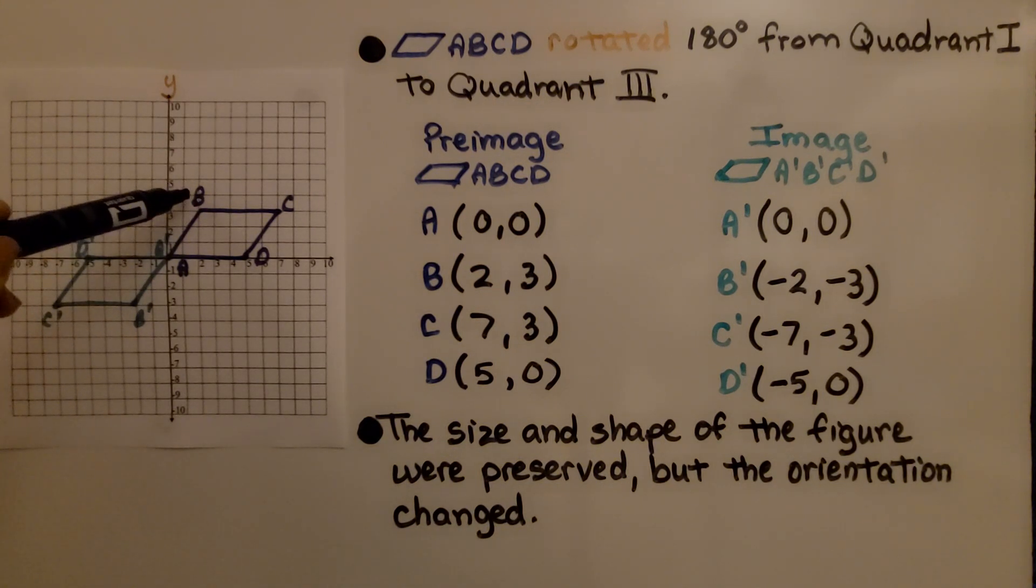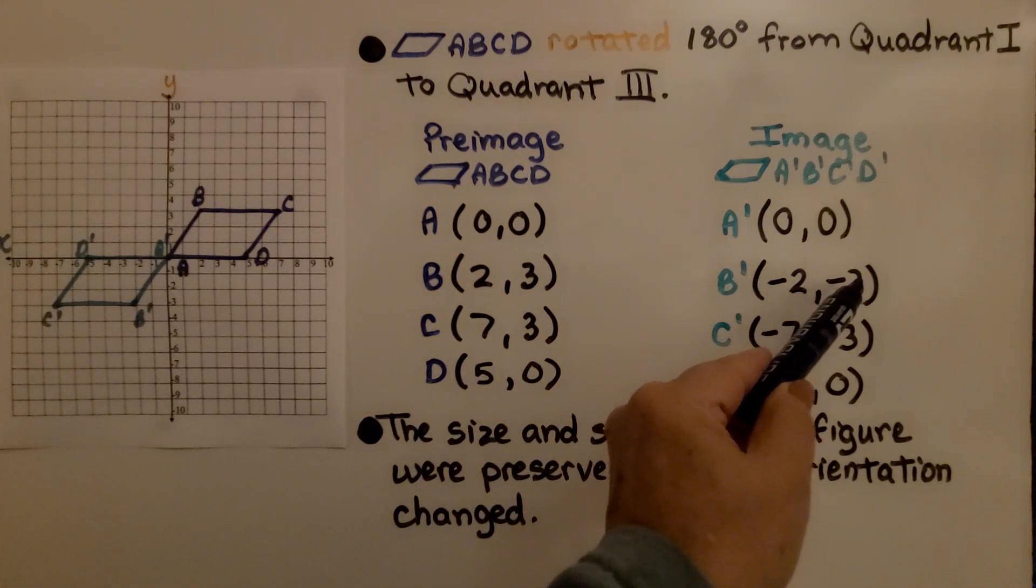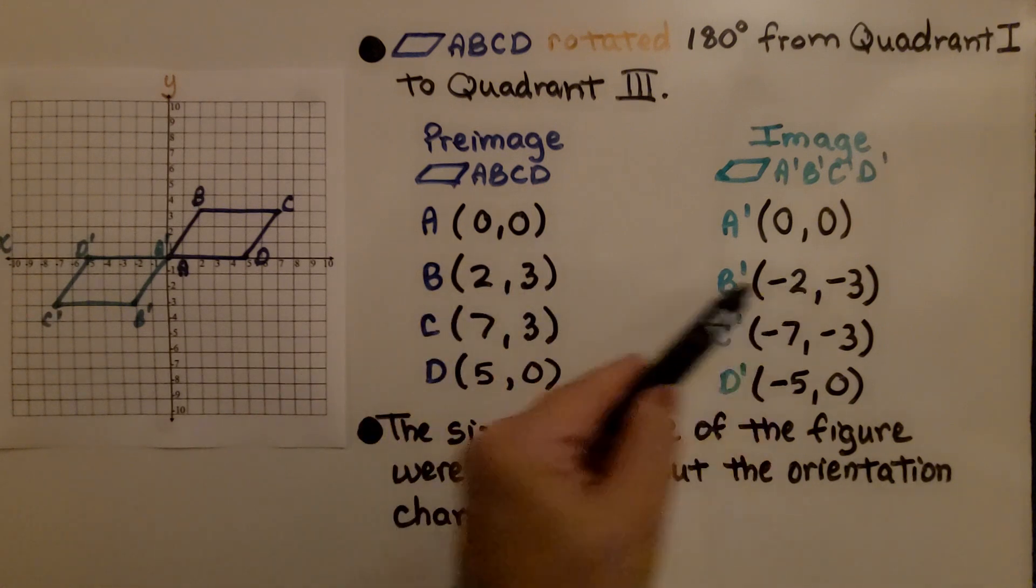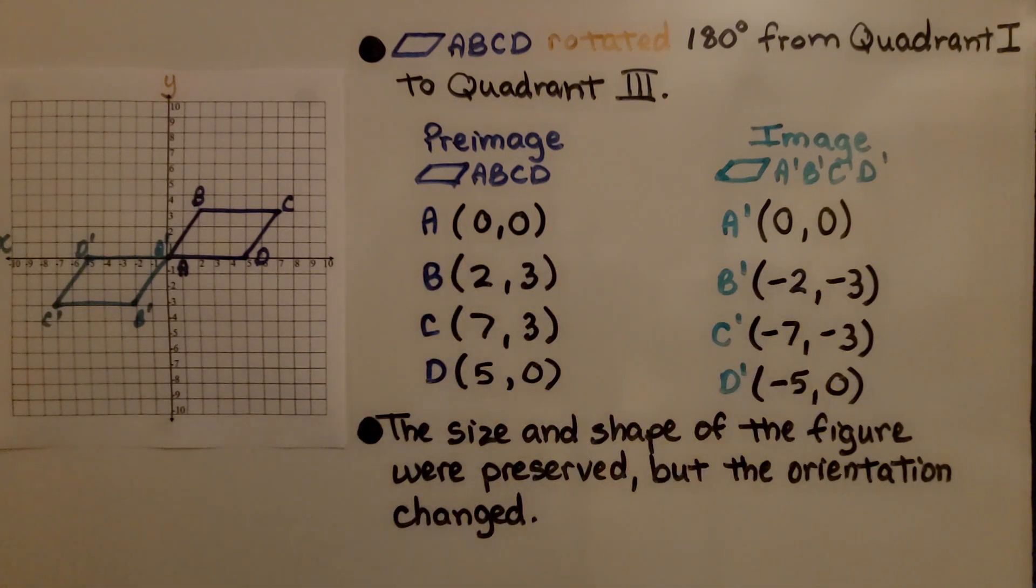B is at (2, 3), and B prime is at (-2, -3). Do you see what happened? These have a positive 2, a positive 3. This is negative 2, negative 3.